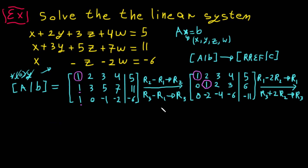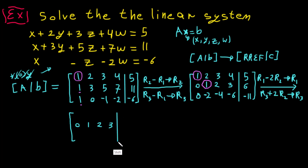We don't want to change anything in the second row, so we rewrite it as is. The augmented line is placed, and we close it. The second row remains: 0, 1, 2, 3, 6.